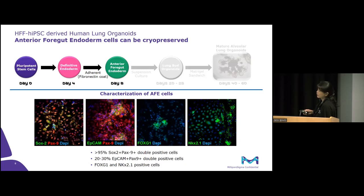We've also characterized these anterior foregut endoderm cells and showed that along with being mostly positive for SOX2 and PAX9, around 20 to 30 percent of the cell population also expresses EpCAM and PAX9. They also express the endoderm markers FOXA1 and NKX2.1. At this stage, it is possible to cryopreserve your anterior foregut endoderm cells for later use — so if there are time limitations, it's very possible to freeze your cells at this stage.